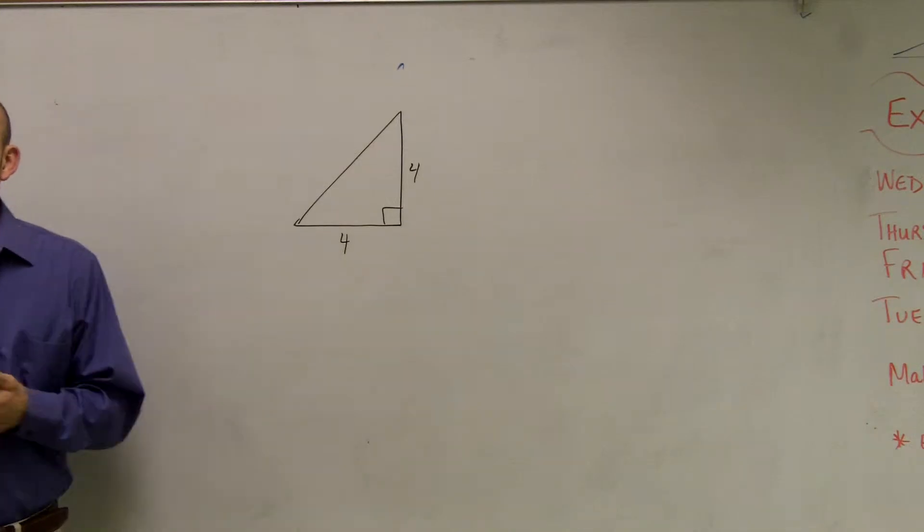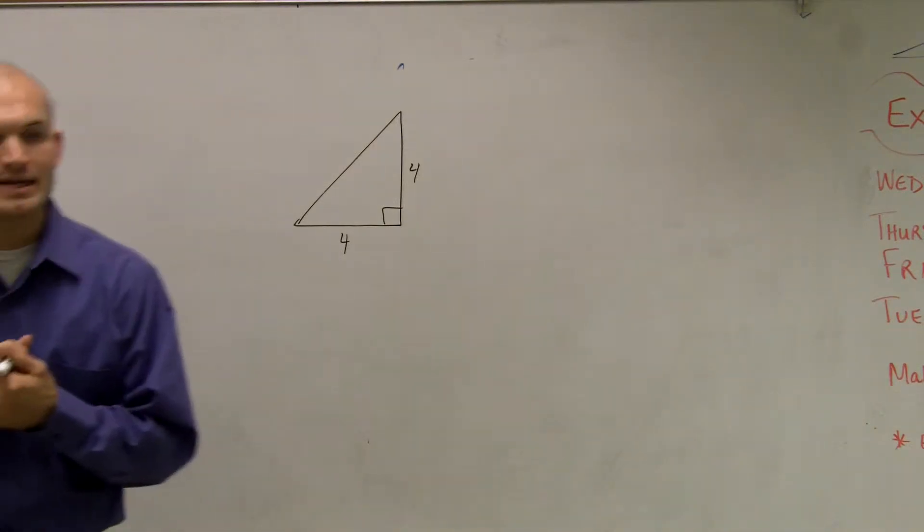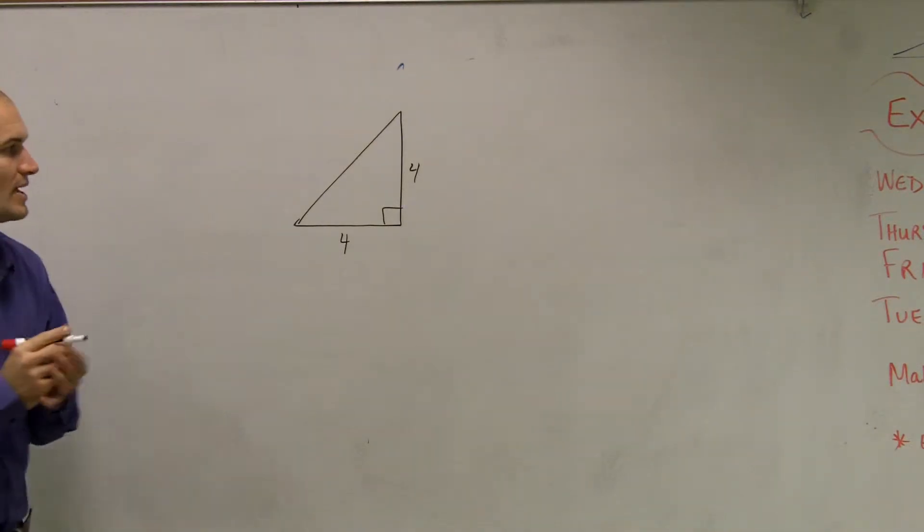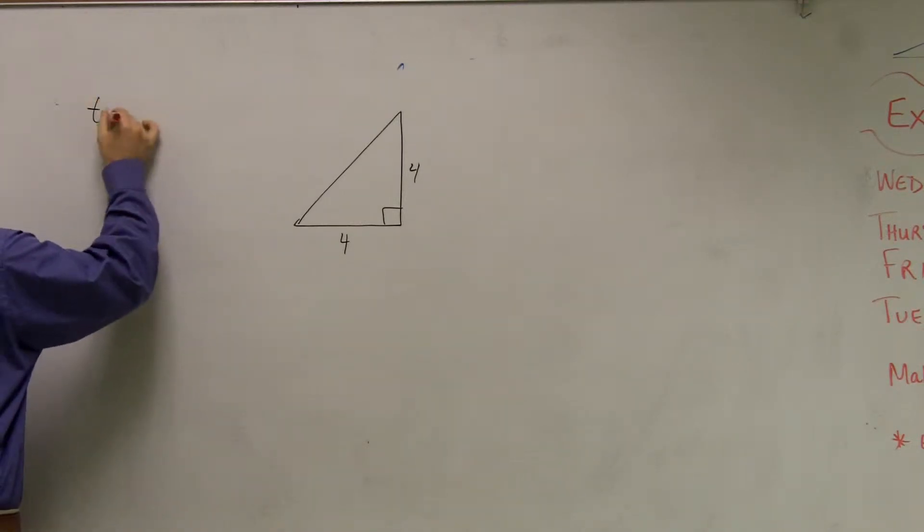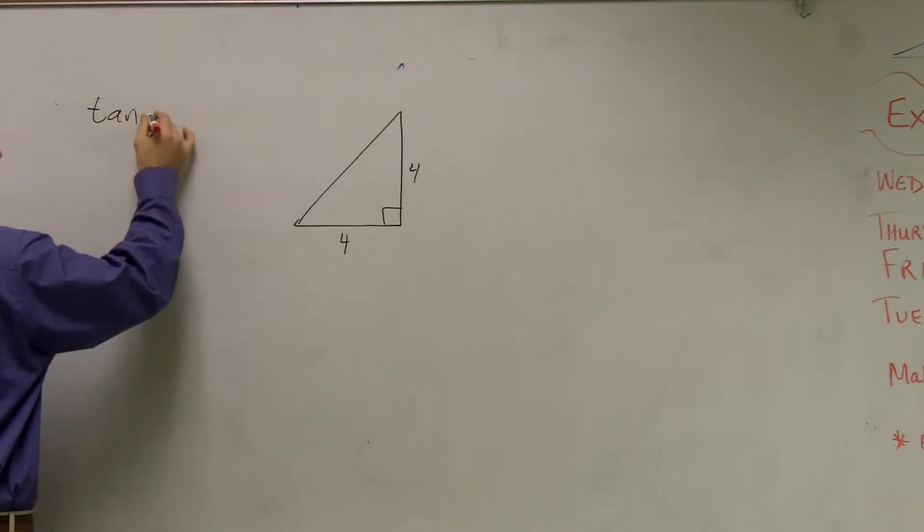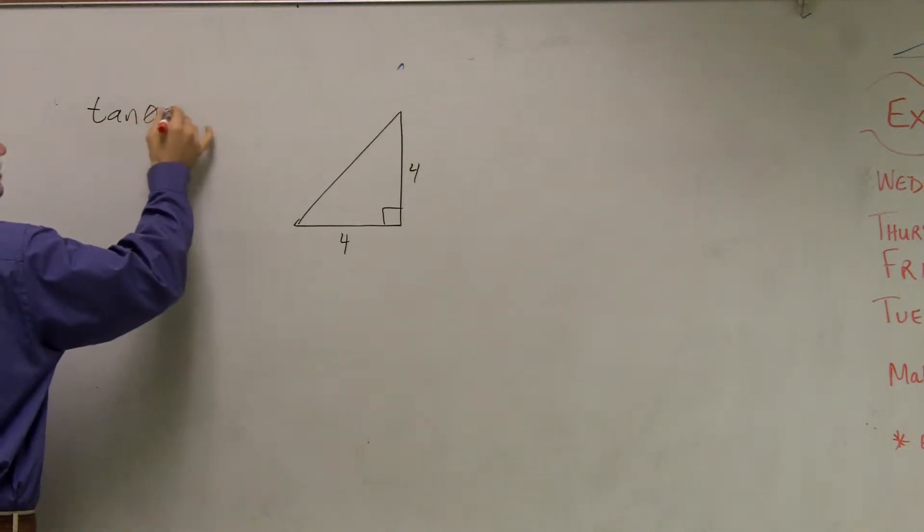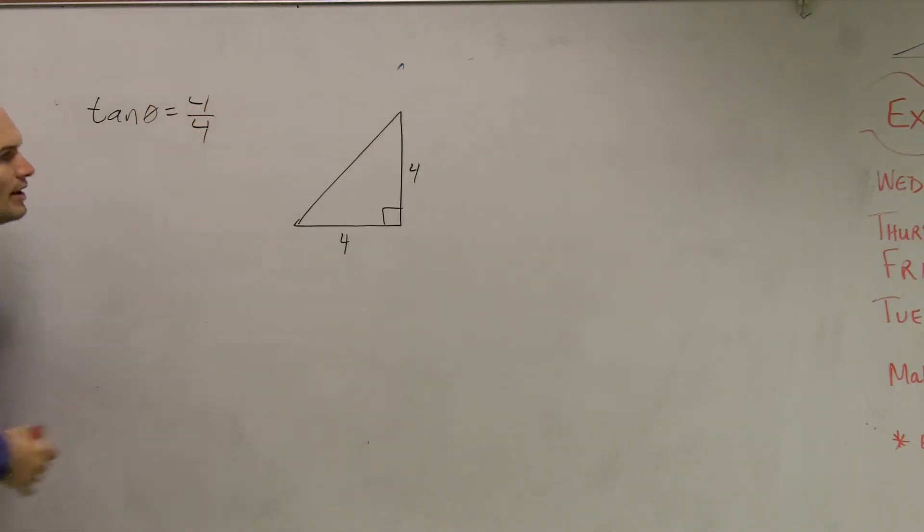So when you guys look at this, you're given a triangle like this. Or even when they give you, like in the other problems from 9 through 13, they didn't even give you the triangle, but they just say that tangent of theta is equal to like 4 over 4. All right?